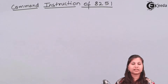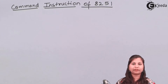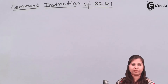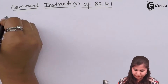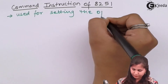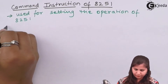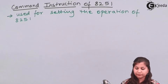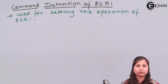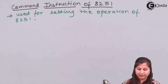There are two types of control words in the 8251: mode instruction and command instruction. Mode instruction determines the functions of the 8251, and the command instruction provides the command from the CPU to the 8251. So here we are studying the command instruction format of the 8251. This control word is used for setting the operation of the 8251, determining what operations the 8251 is going to perform, and it is written by the CPU into the control registers.